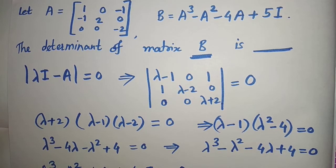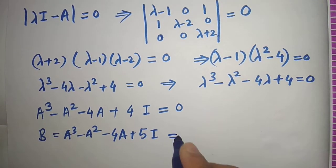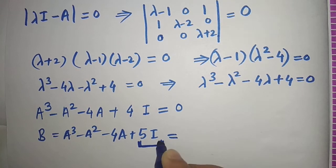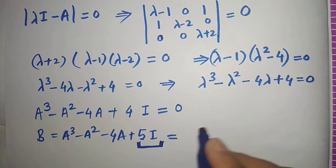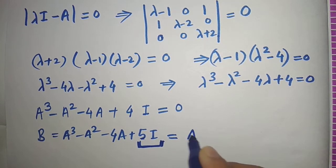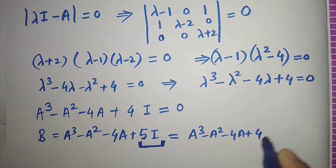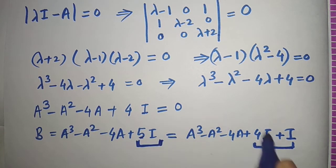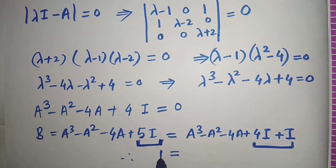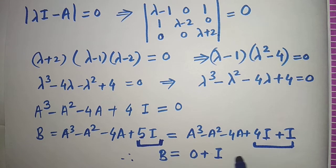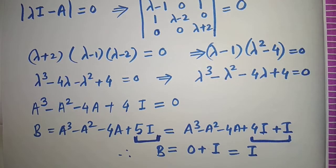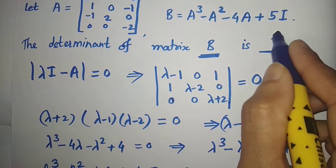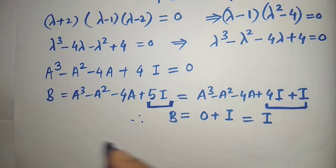Now B = A³ - A² - 4A + 5I. We split 5I as 4I + I and rewrite B as (A³ - A² - 4A + 4I) + I. Since the first part equals zero by Cayley-Hamilton, B = 0 + I = I. Therefore the determinant of B equals the determinant of the identity matrix, which is 1.